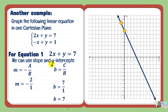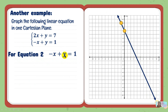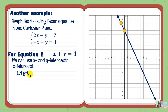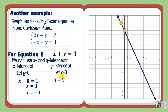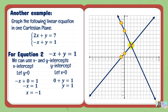For the second equation, negative x plus y equals 1 — all numerical coefficients and the constant are 1, so we use x and y intercepts. Letting y equal 0: negative x equals 1, divide both sides by negative 1, giving x-intercept of negative 1. Letting x equal 0: 0 plus y equals 1, so the y-intercept is positive 1. We plot negative 1 on the x-axis and positive 1 on the y-axis, then draw the straight line. The point of intersection is the solution to the system, which is at 2 and 3.